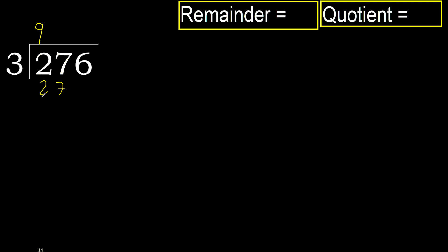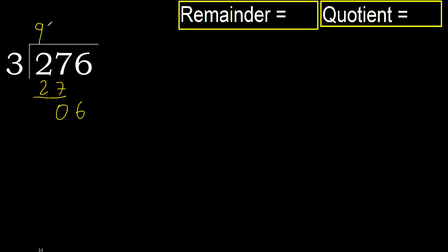27 is not greater, subtract: 27 minus 27 is 0. Next, bring down 6. 3 multiply by 2 is 6. 6 is not greater, 6 minus 6 is 0. Next.